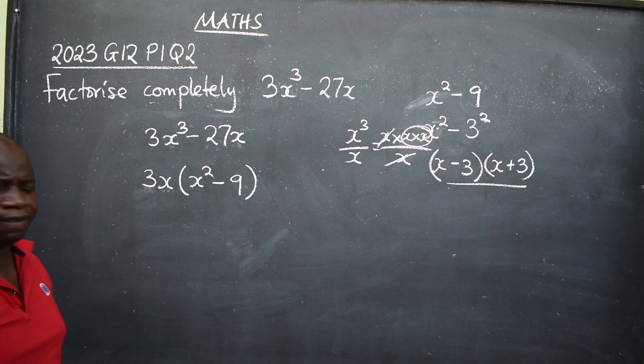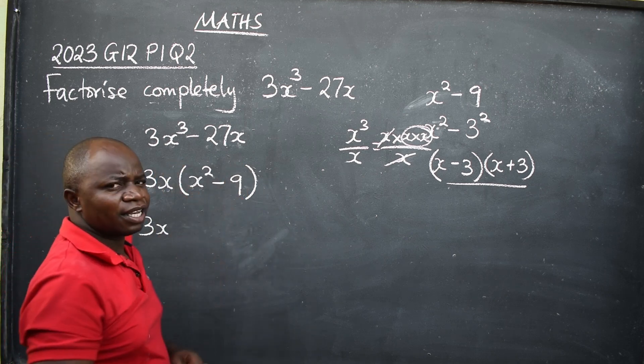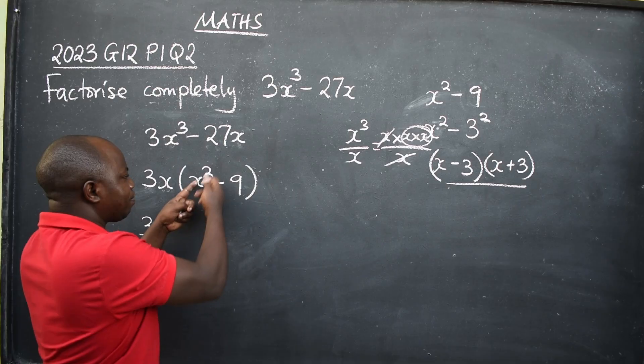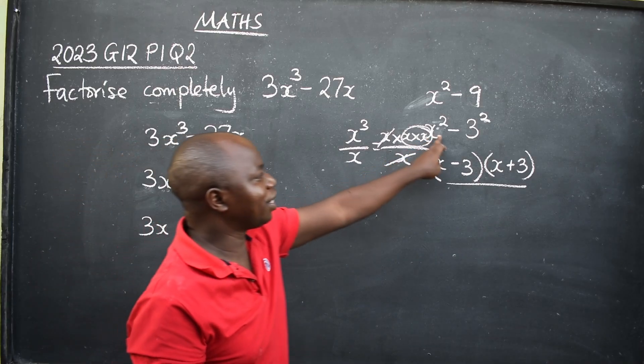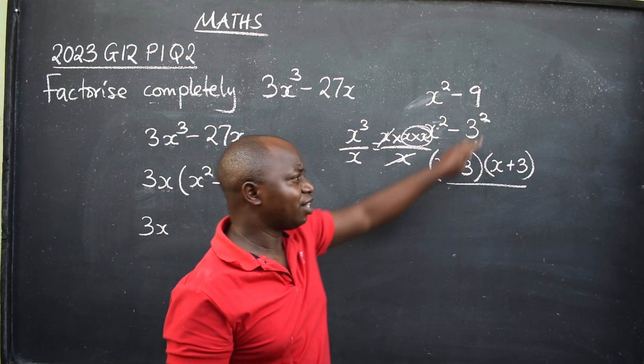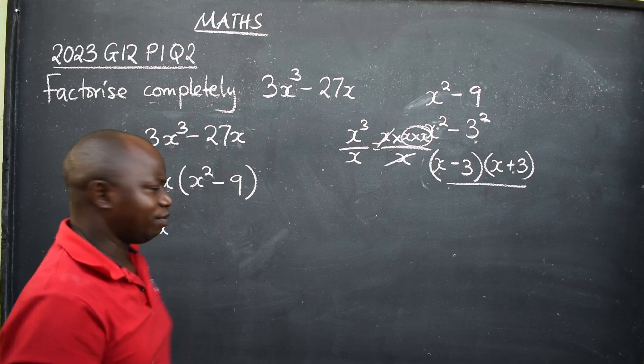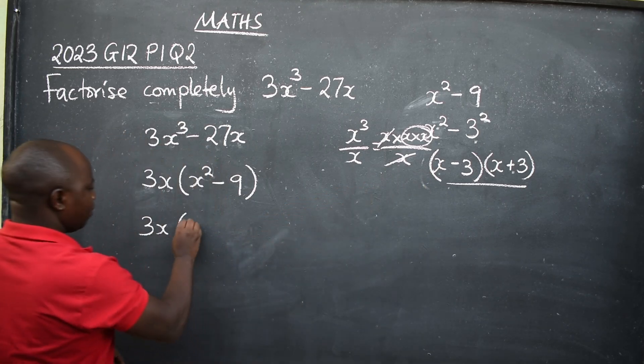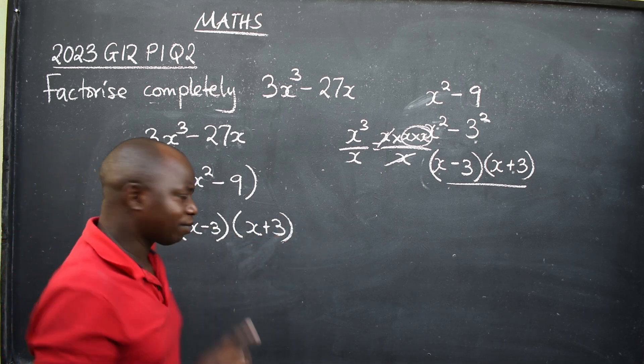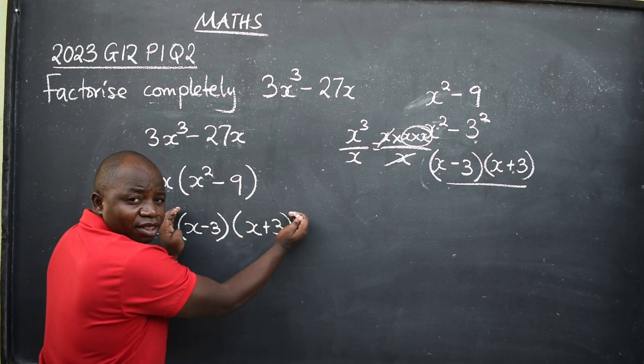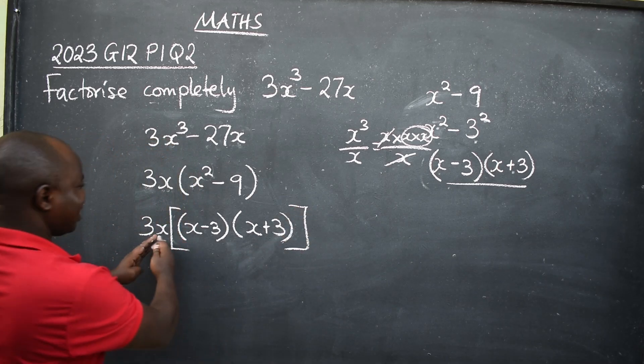What next? You have this 3x here. What is inside here now is the difference of two squares because 9 can be expressed as a square. When I express 9 as a square, I'm going to get this. I factorize this. You ignore the squares. Now, when you are replacing, you'll be able to write the way it is: x minus 3, then the other one x plus 3. Now, I want you to take note: you have this 3x outside which is affecting both. It means you introduce square brackets like this. This is the correct way of writing.